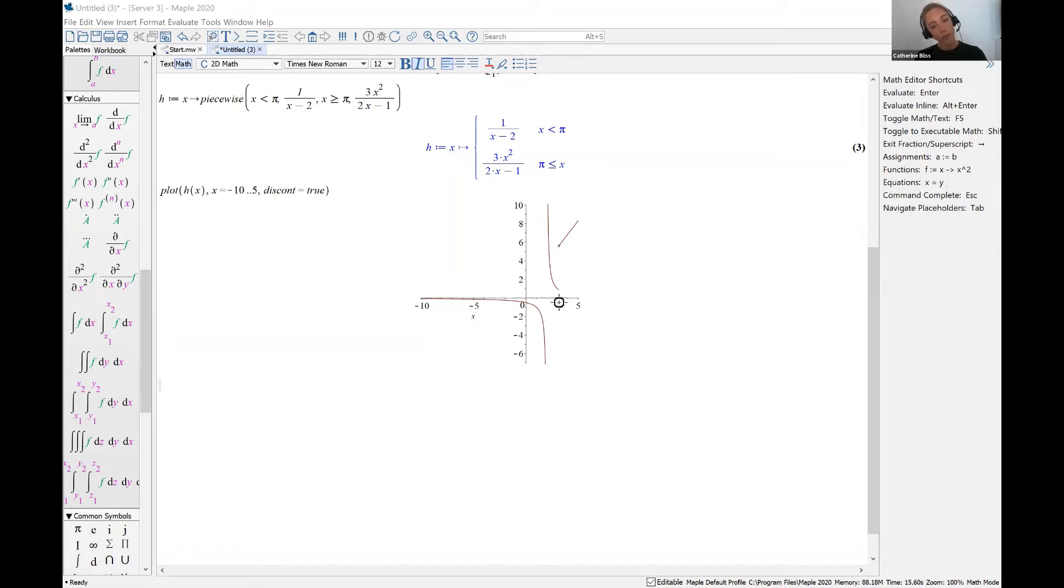When x is greater than or equal to pi, we see that we also have a rational expression. But in the long-term behavior, it looks like it's going to keep increasing.